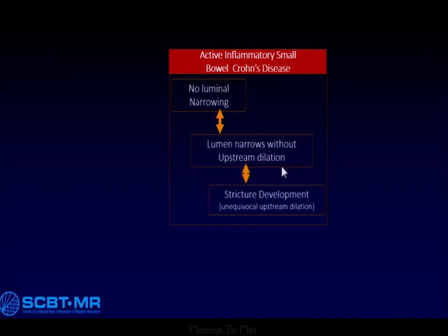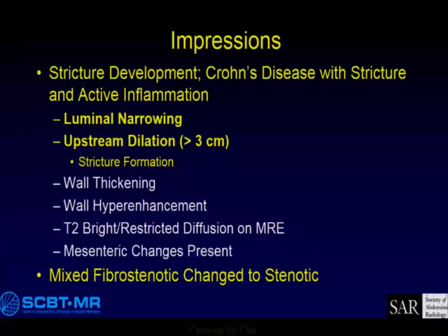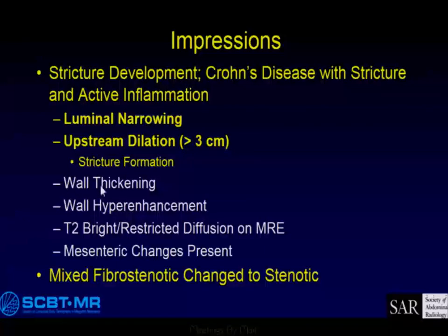What happens when things progress and we start developing a stricture? You've got luminal narrowing and then upstream dilation — stricture formation. If you look at pathology reports, their definition of a stricture is when the lumen is gone. We have defined it as: upstream dilation, wall thickening, wall hyperenhancement, T2 bright, restricted diffusion. Everything present on active disease is going to be there with stricture development and active Crohn's disease.